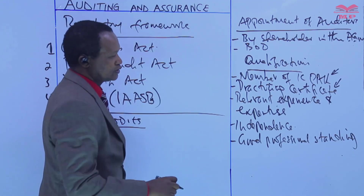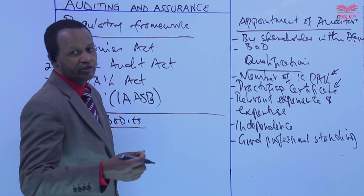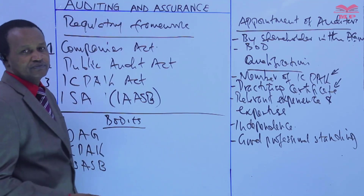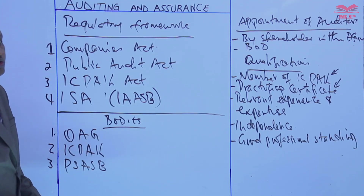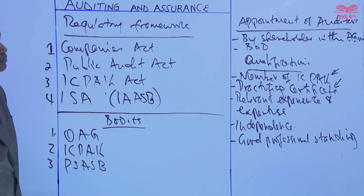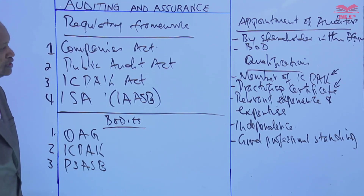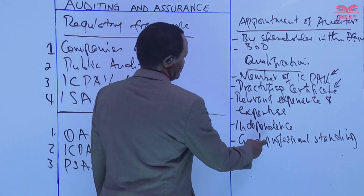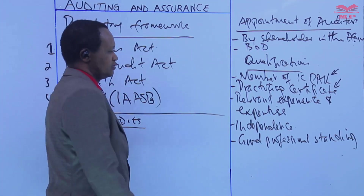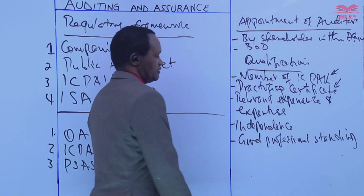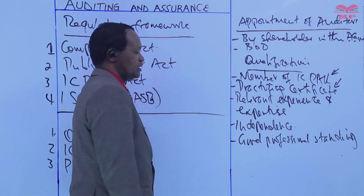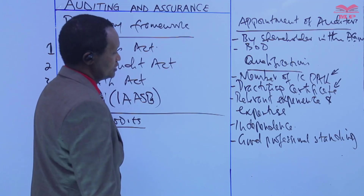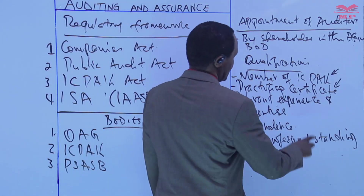That means no record of misconduct, no record of indiscipline, no ethical violations. So these are the five key qualifications: one — membership of ICPAK; two — practicing certificate; three — relevant experience and expertise; four — independence; five — good professional standing, which means one must have no record of professional misconduct and must not have violated ethical standards.